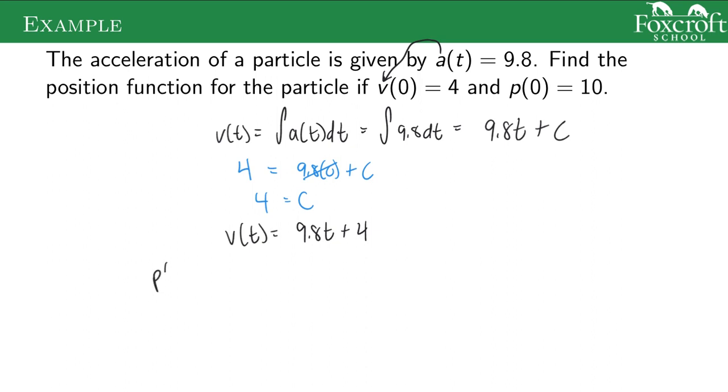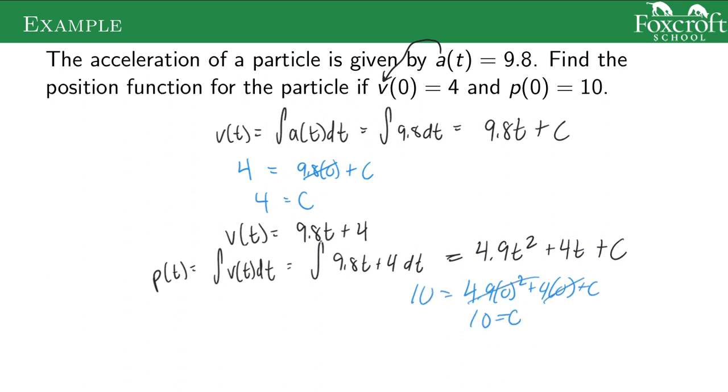And now I want to find position. Position is just the antiderivative of velocity, which is the antiderivative of this function I just found, which is 9.8t squared over 2 turns into 4.9t squared plus 4t plus c. Again, I don't know what c is yet, but I know if I plug in 0 for t, my position is equal to 10. And again, all this stuff cancels out and that tells me c is 10. So my final answer, my exact answer for position is 4.9t squared plus 4t plus 10.